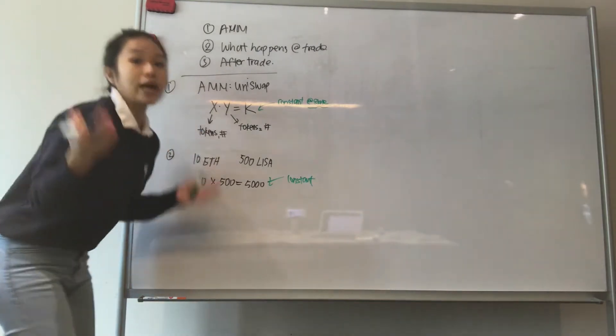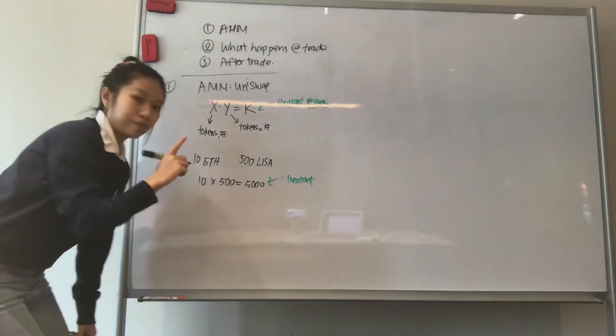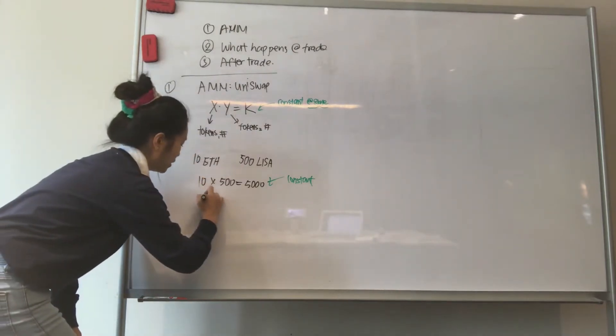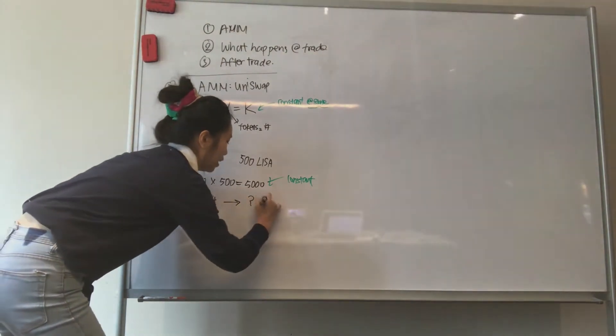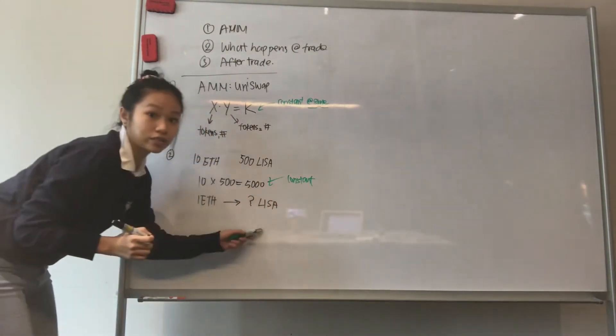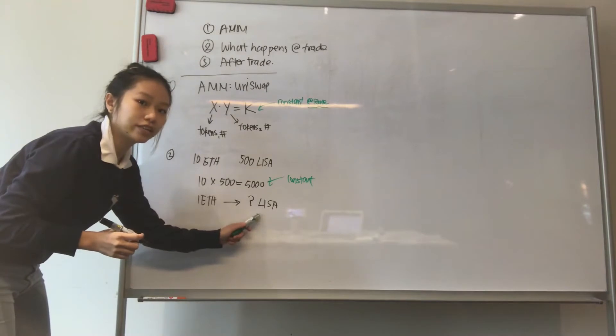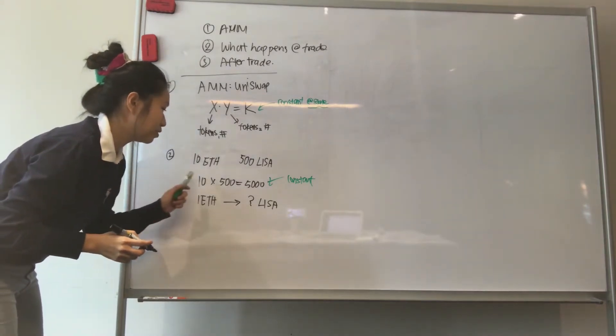Now let's say someone wants to buy LISA tokens. So we spend 1 ETH to buy an unknown number of LISA tokens. How do we calculate this unknown number of LISA tokens? Very simple.